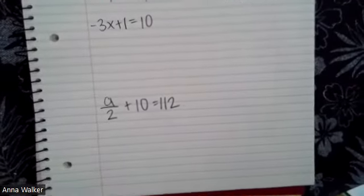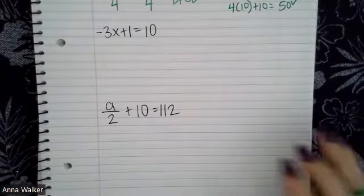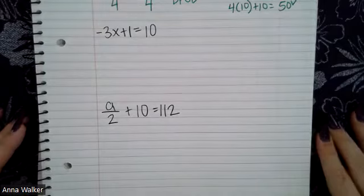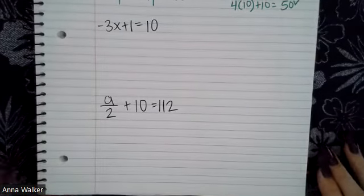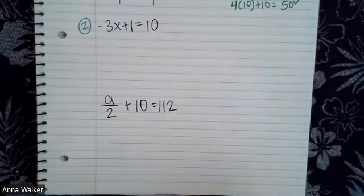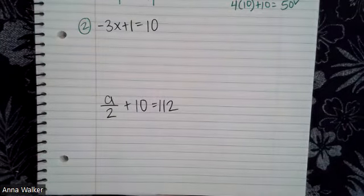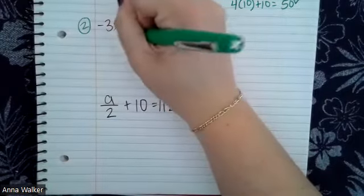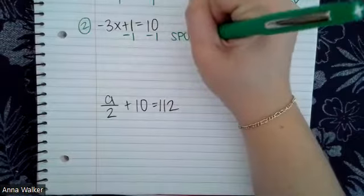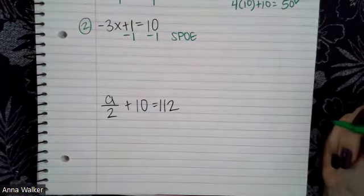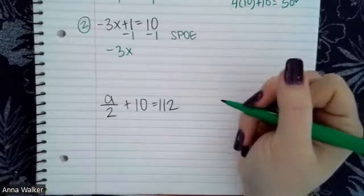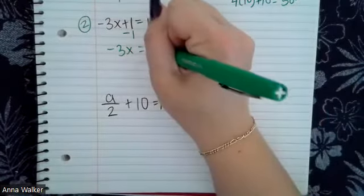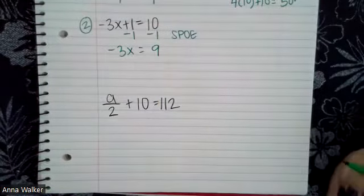Let's try two more. If you want, take a moment to pause and write down the last two problems. So let's talk about number two over here. We have negative three X plus one equals 10. The first thing I'm going to do is look and see if I can combine any like terms — I can't. So I'm going to look at my constant, which is being added. I'm going to use the subtraction property of equality, so I'm left with negative three X, and one minus one is zero, equivalent to nine because 10 minus one is nine.